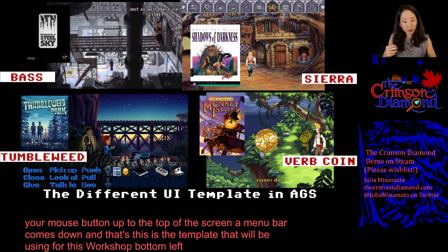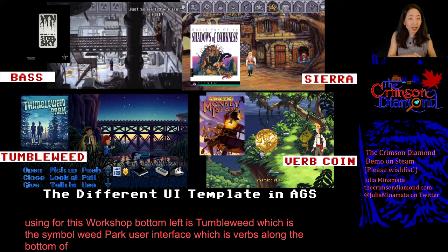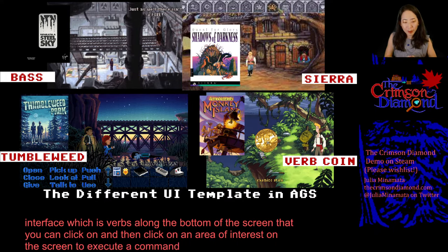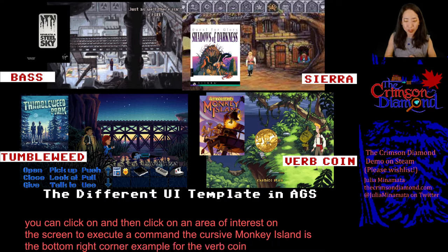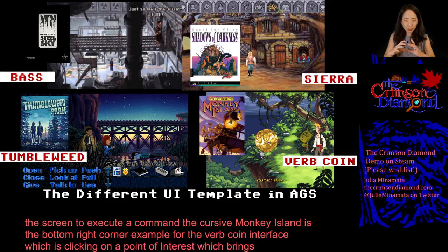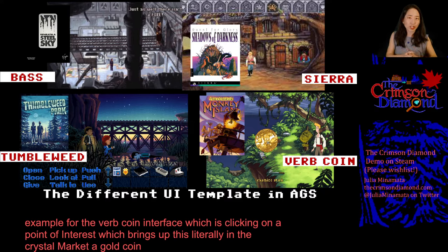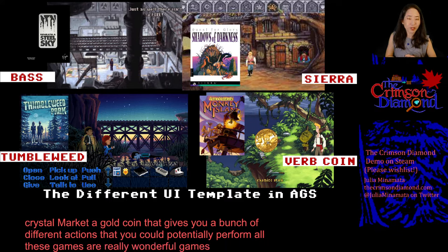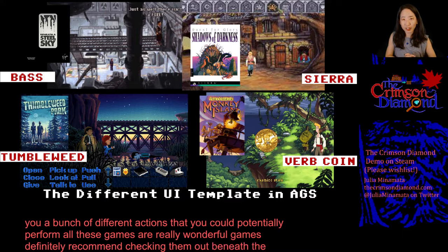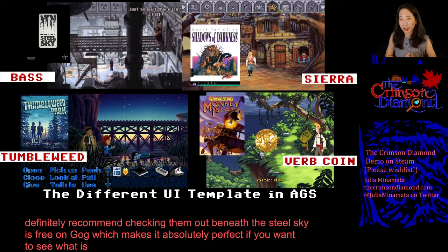Bottom left is Tumbleweed, which is the Thimbleweed Park user interface — verbs along the bottom of the screen that you click on, then click on an area of interest to execute a command. The Curse of Monkey Island is the bottom right example for the verb coin interface, where clicking on a point of interest brings up a gold coin giving you different actions to perform. All these games are wonderful — Beneath a Steel Sky is free on GOG.